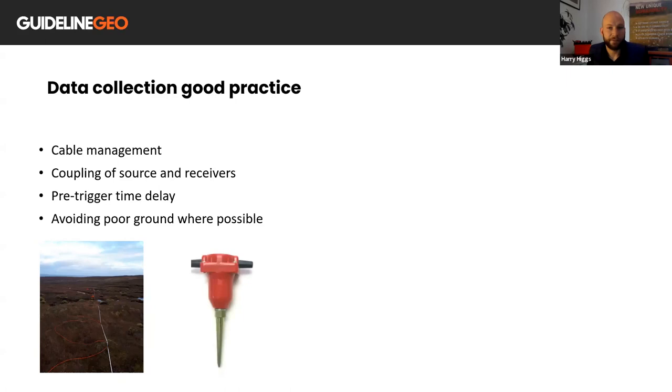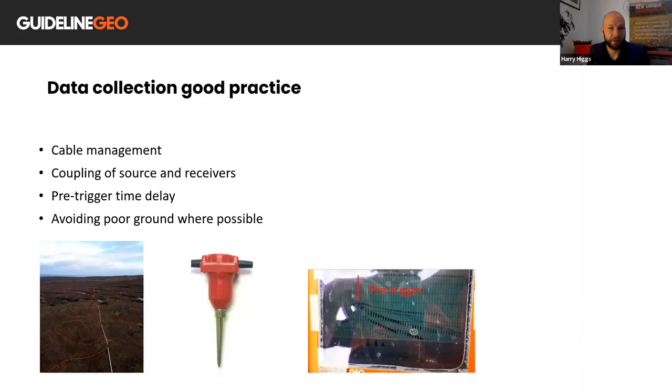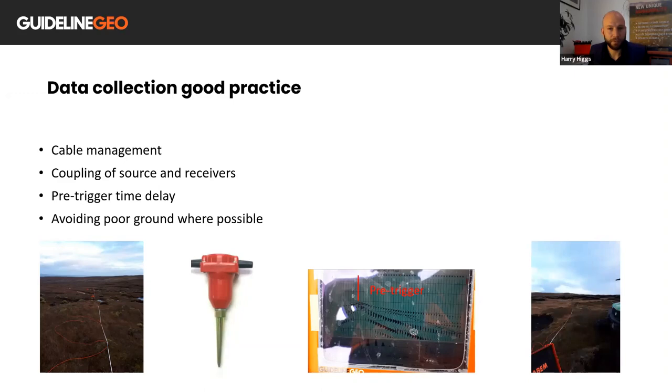Receivers and sources need to be as well coupled to the ground as possible to ensure the signal can be transmitted with as little loss in energy as possible. Wind and rain can act as a significant noise within a shot record so it can help to bury or place weighted pots on top of them when the weather is poor. Pre-triggers can record a set amount of data prior to the shot triggering on the seismograph and allows users to assess the repeatability of the source which is good for quality control. And lastly areas of standing water or soft ground can cause poor coupling between the geophone and the ground resulting in poor signal transmission. So where possible it's always good to avoid such areas when planning where to place an array.